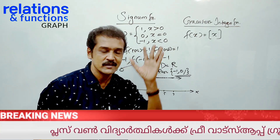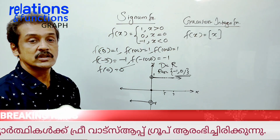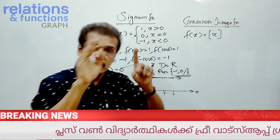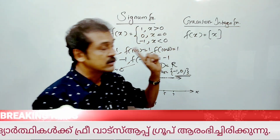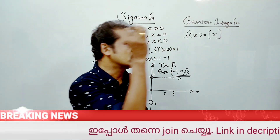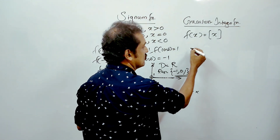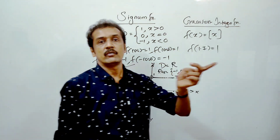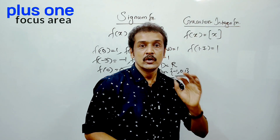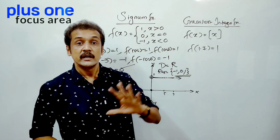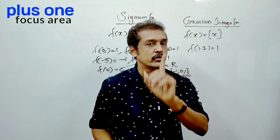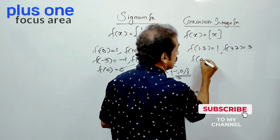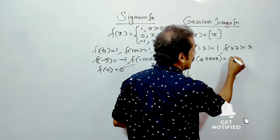This is the greatest integer function. The definition and notation uses a square box. The y is the greatest integer function of x — it gives the integer part. For example, f of 1.7 — the answer is 1. f of 3.7, the answer is 3. f of 4.999 — the answer is equal to 4.